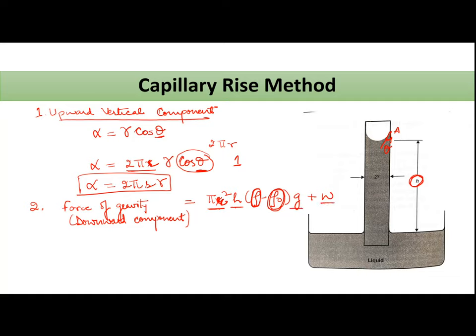g is your acceleration. W is the weight which lies above this. Agar hum height le rahe hain lower point of the meniscus se, toh yeh jo shaded portion hai jisko main red shade kar rahi hun, this is not considered in this particular height h. So the weight of this segment, jo red segment hai, shaded portion hai, jo meniscus ke andar aa jata hai, jise hum h se bahar kar dete hain, uski weight ko bhi hum consider karte hain.Isko hum correction factor bhi bol dete hain. If we don't consider this w over here, kai baar kuch liquids ke case mein error aa jati hai aapki computation.